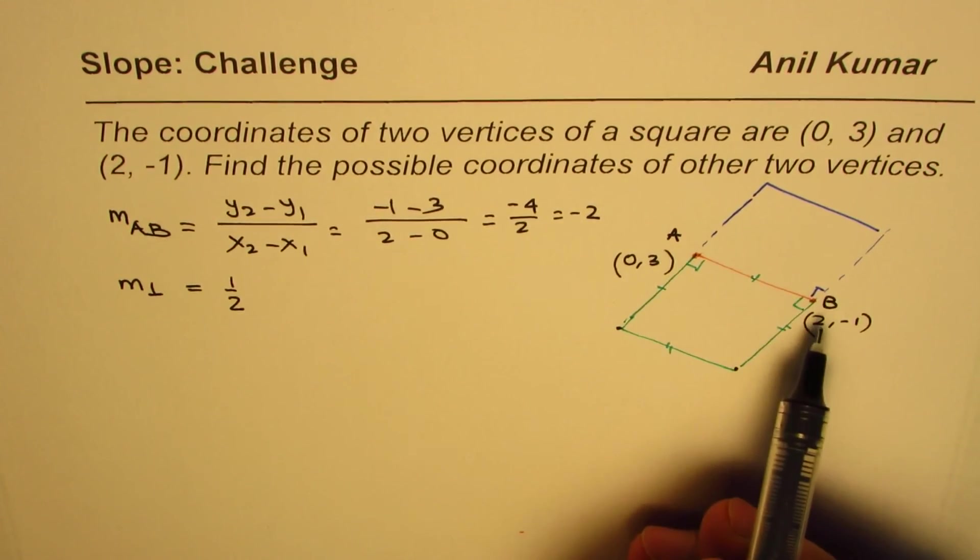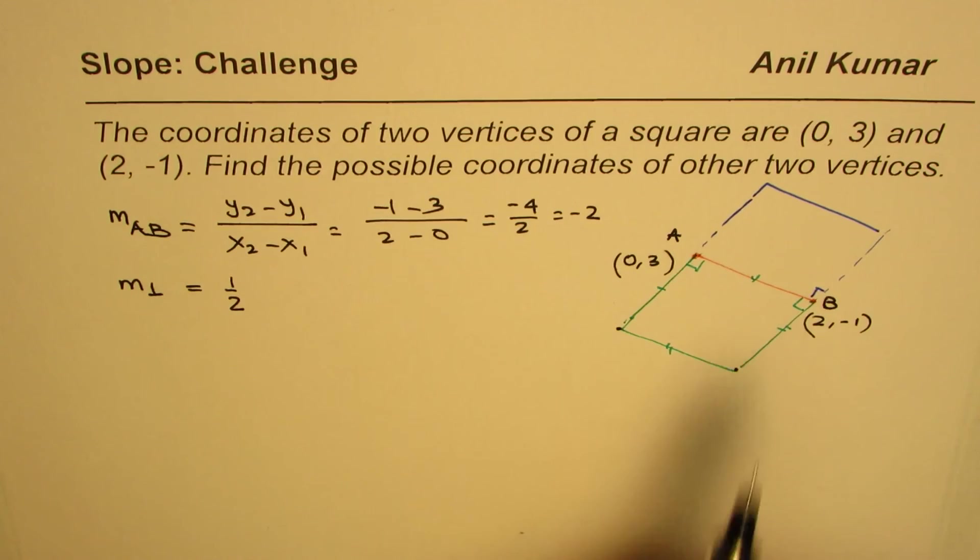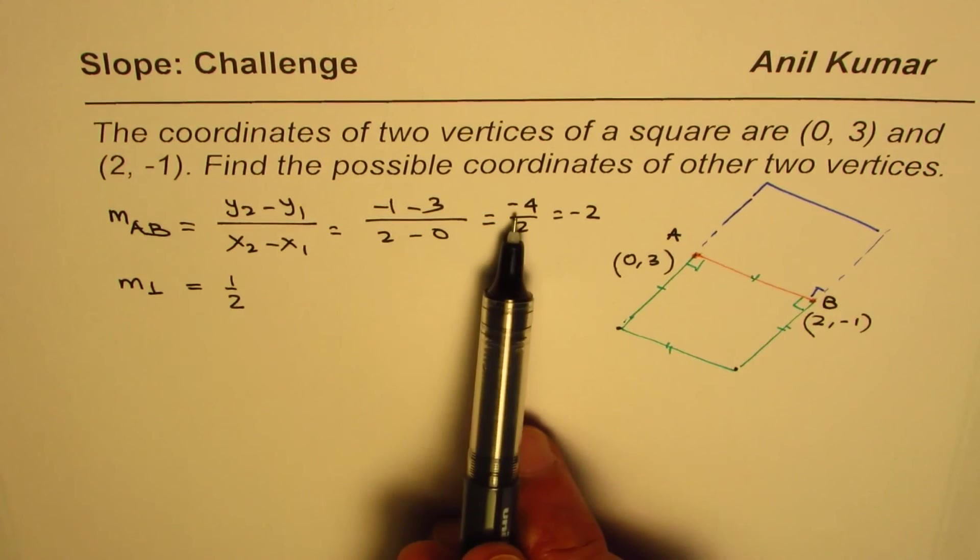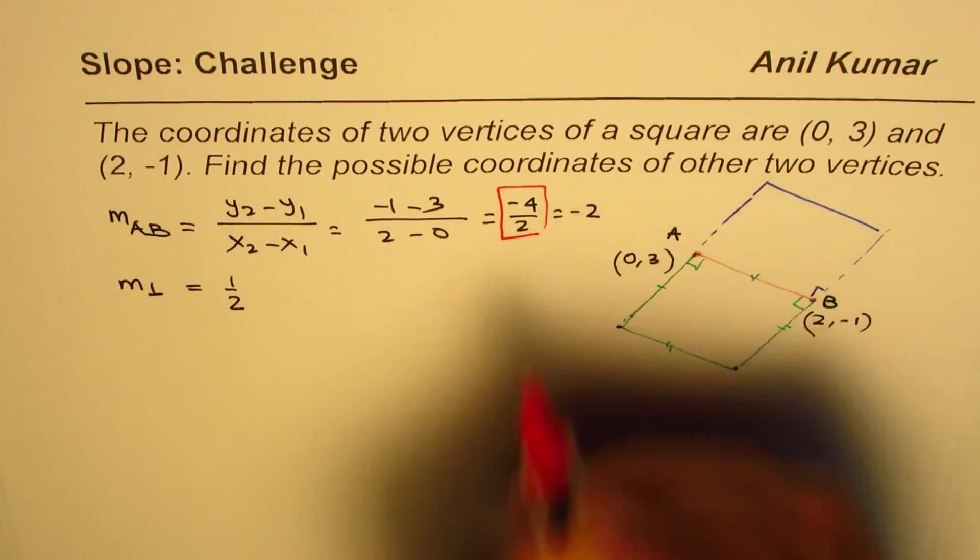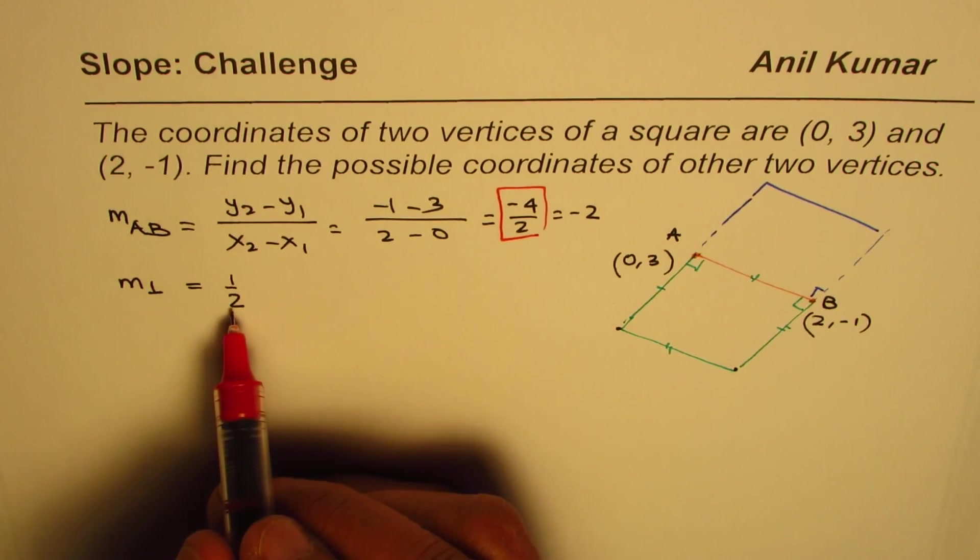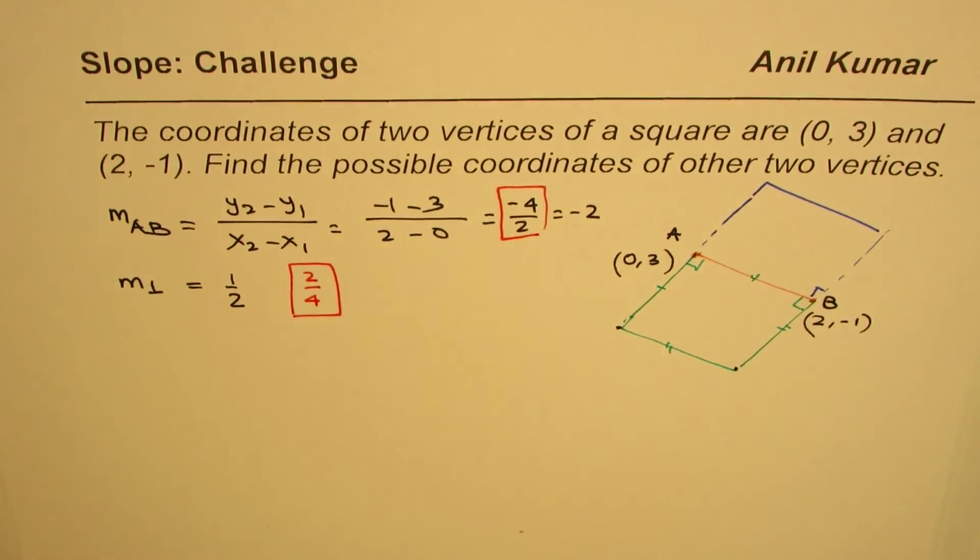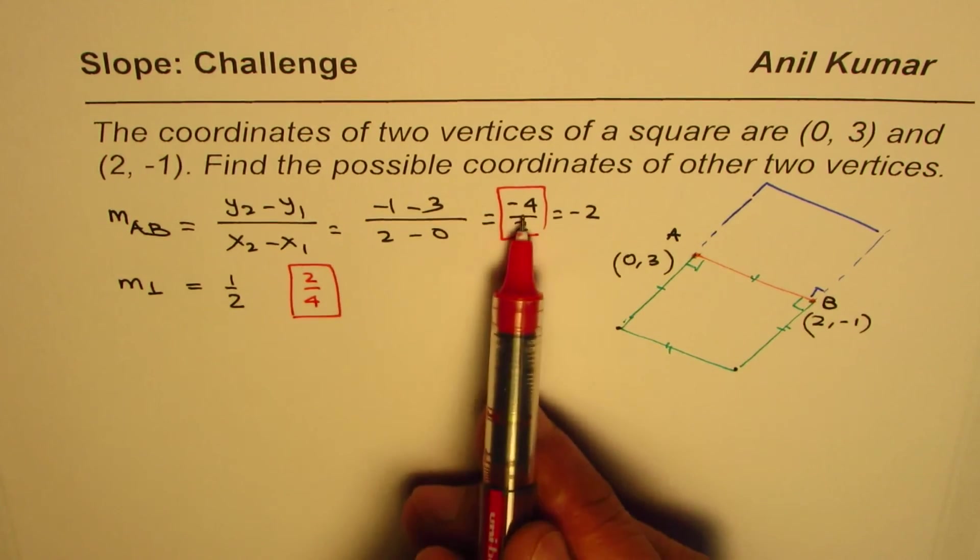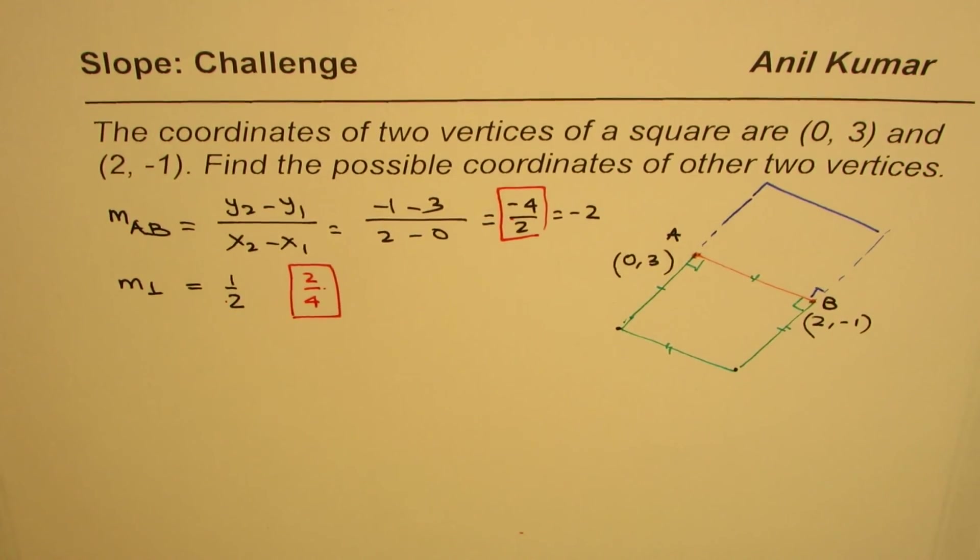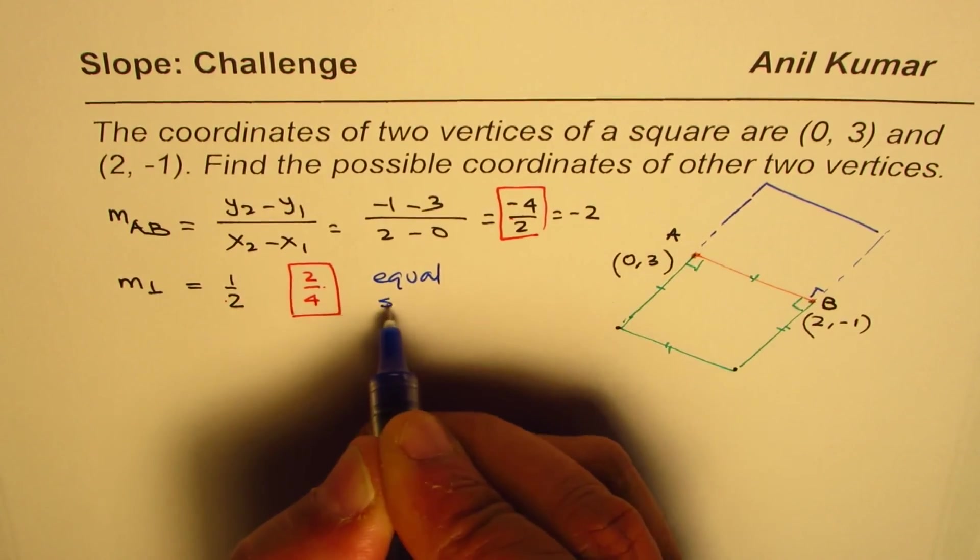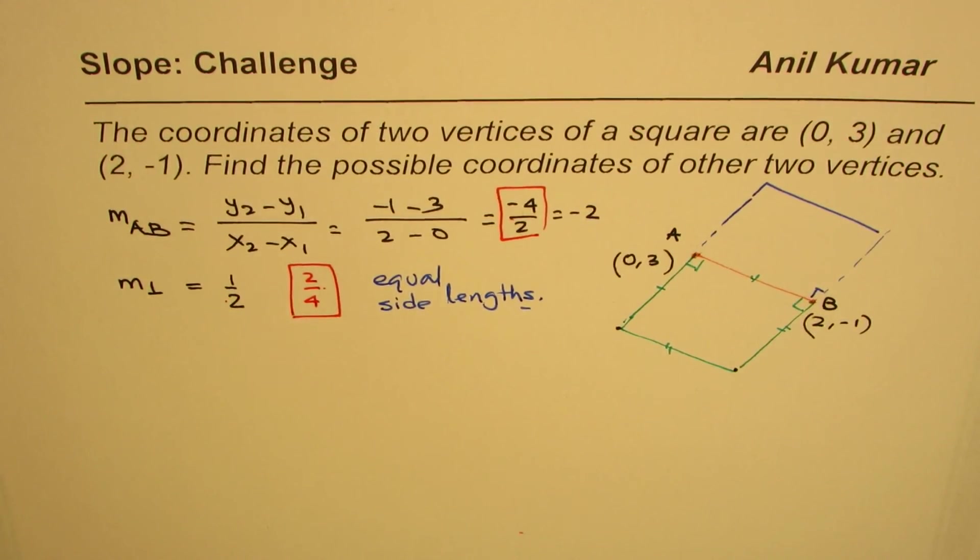Another way of looking at this: if I move from A to B, what is the change in x and the change in y? It's -4 over 2. When I say 1/2 for the perpendicular slope, the change could be 2 over 4. If I maintain this constant ratio, then I also ensure equal side lengths.